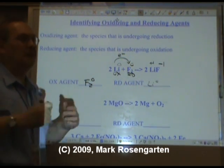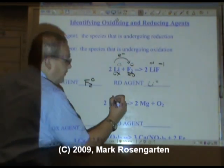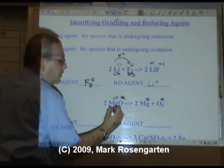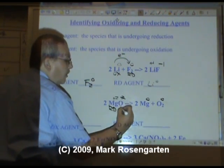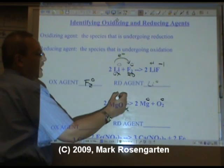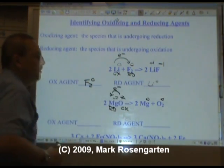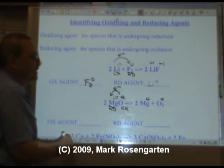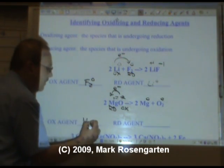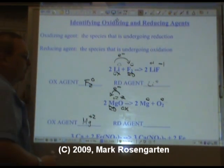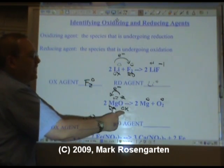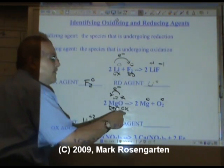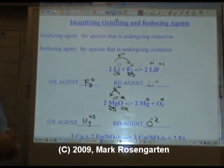You got chocolate in my peanut butter? You got peanut butter on my chocolate. In this reaction, the magnesium is reduced to zero and the oxygen is oxidized to zero. That means the oxygen gave up its electrons to magnesium. Magnesium could not be reduced without oxygen giving up its electrons — therefore magnesium plus two is the oxidizing agent. But the oxygen couldn't have been oxidized if the magnesium hadn't taken those electrons, so O minus two is the reducing agent.